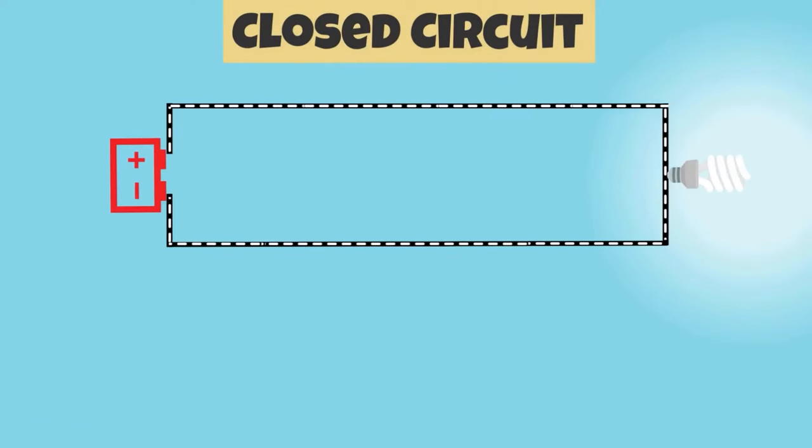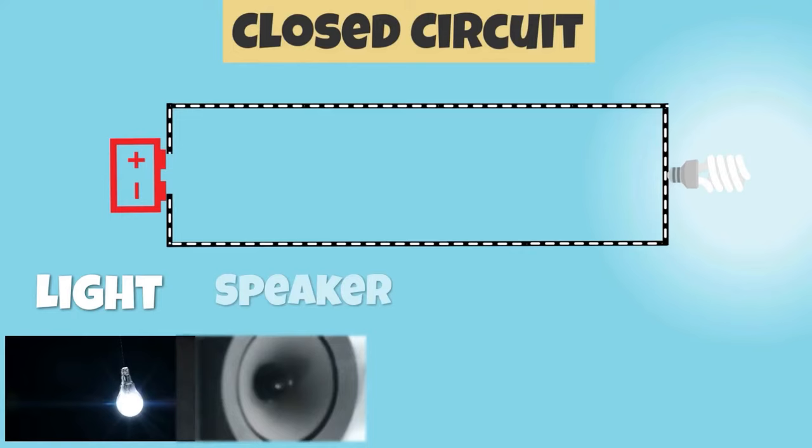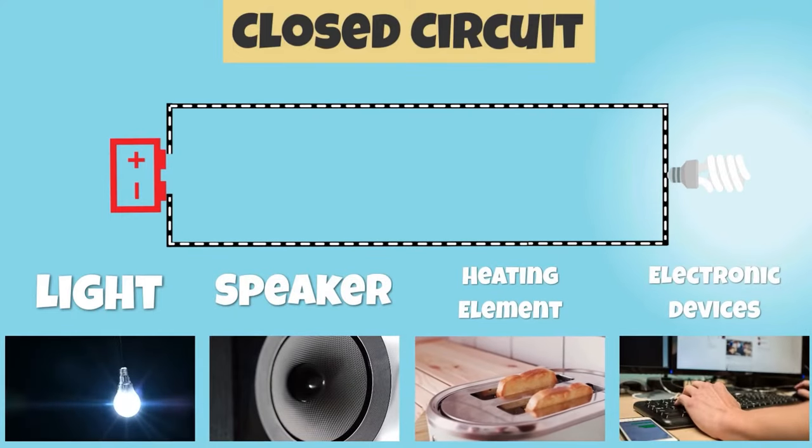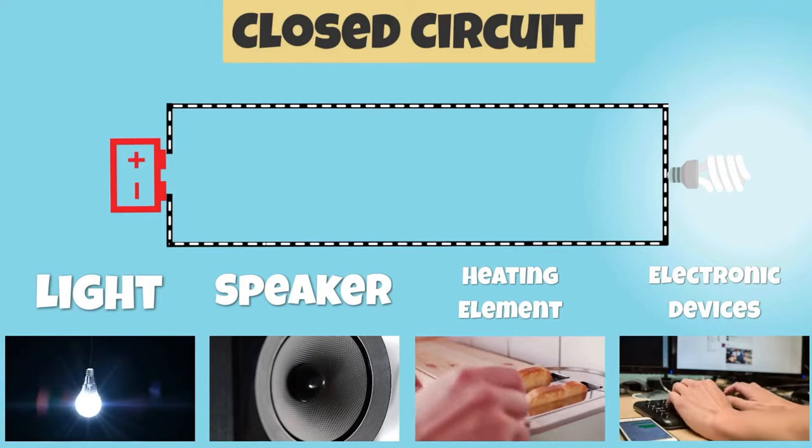A closed circuit forms a complete path for electrical energy to flow through and circulate. A light, speaker, heating element, and other devices can be powered by electricity flowing through a closed circuit.